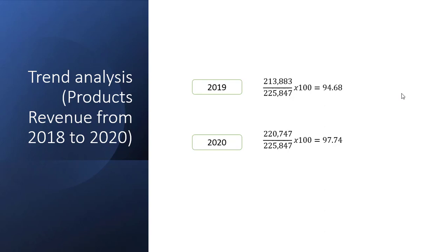Using Apple Inc.'s information, we will have 2018 as our base year. In 2019 we have 213 trillion 883 billion divided by the product revenue amount from 2018, then multiply by 100. For 2020, the same product revenue from 2020 is divided by product revenue from 2018, then multiply by 100. From the base year you can see that in 2019 it got an increase of 94.68%, against 97.74 in 2020, meaning comparatively 2020 performance is better than 2019.